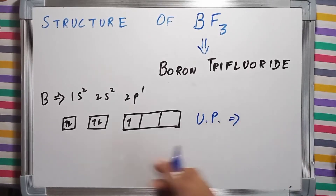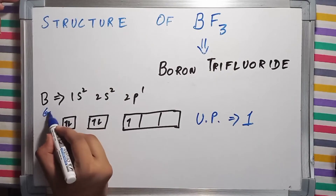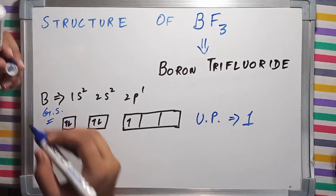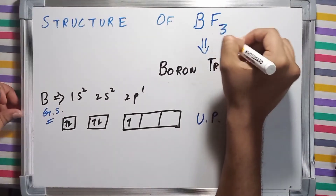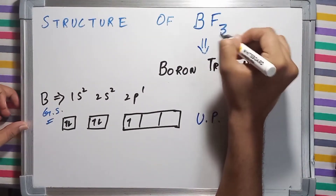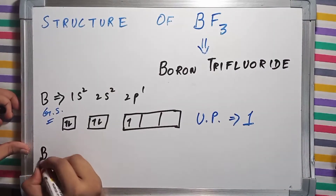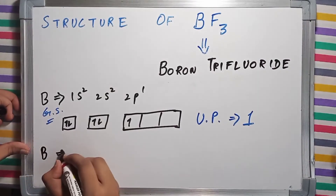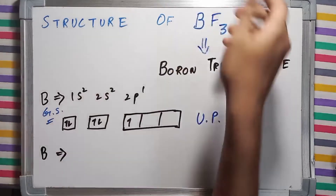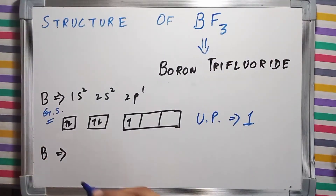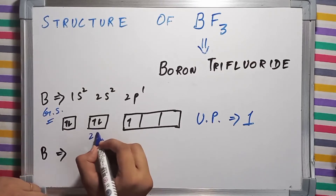The number of unpaired electrons in the ground state is one. Now, boron is going to make three bonds because, as you can see, it is BF₃. So having only one unpaired electron is not sufficient, and we are going to draw the orbitals in the excited state.